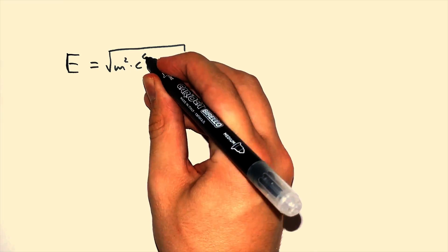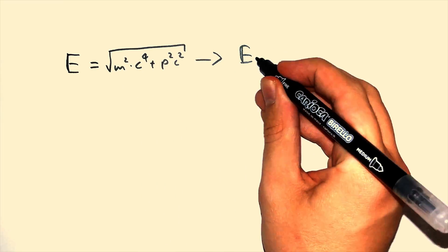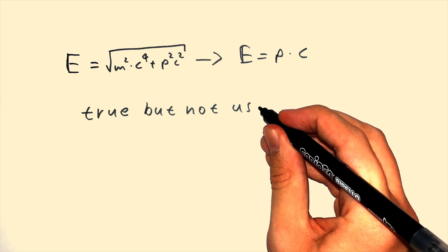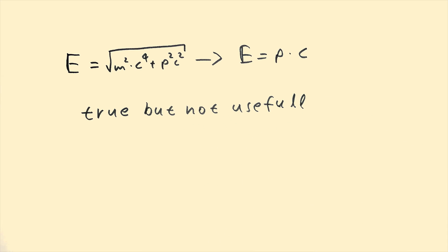Which means this equation, and as a consequence this equation is true, but not useful for photons. It is only used to derive the momentum equation for photons, which is HF over the speed of light, and nothing else.